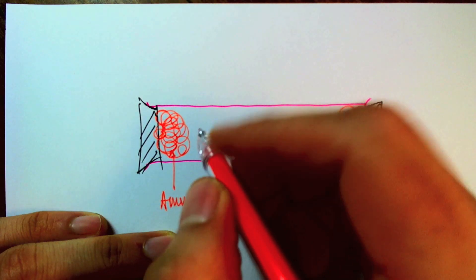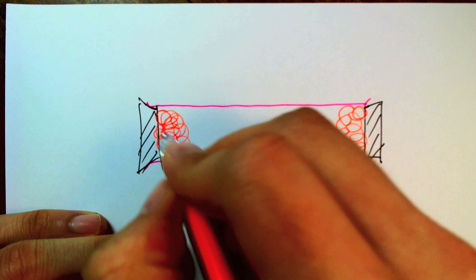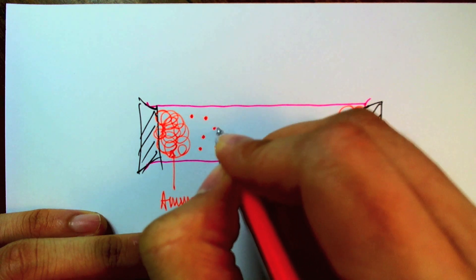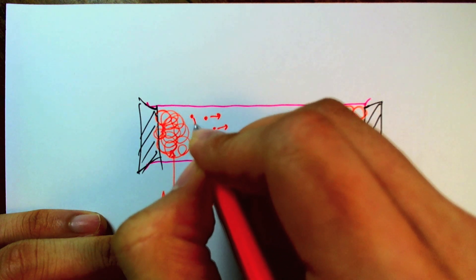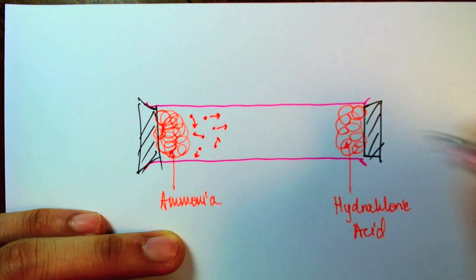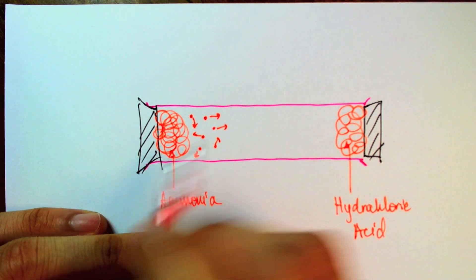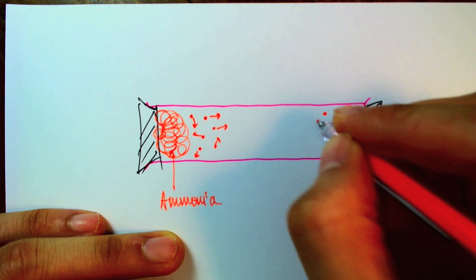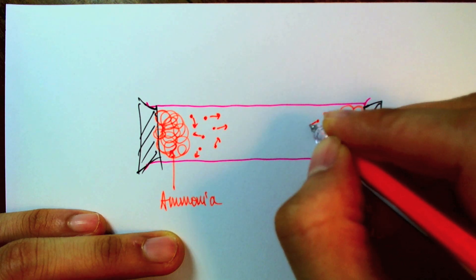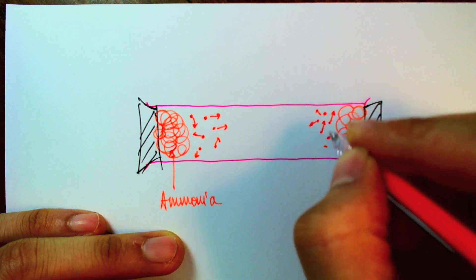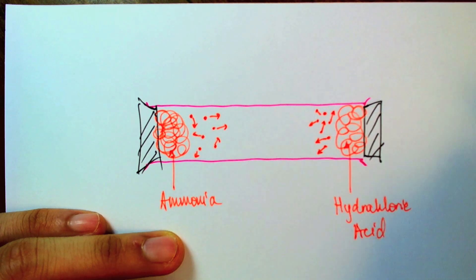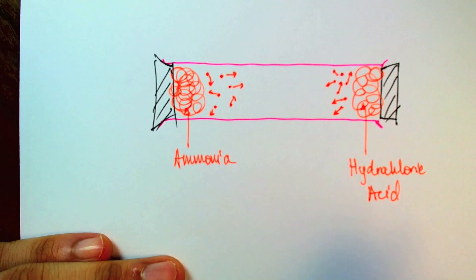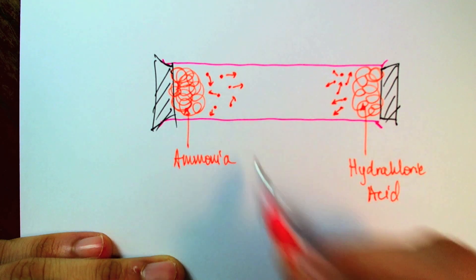What's going to start happening is that these liquid ammonia is going to start evaporating, leaving the cotton wool and start diffusing over to an area of lower concentration, meaning they'll start moving in this direction. And the hydrochloric acid will start drifting to the left because there's a high concentration of hydrochloric acid here and a lower concentration here. So, they will meet somewhere in the middle.